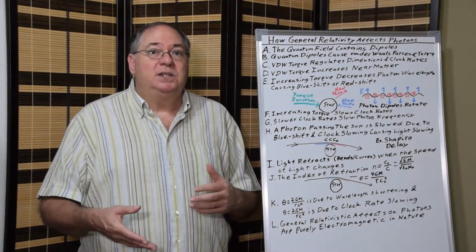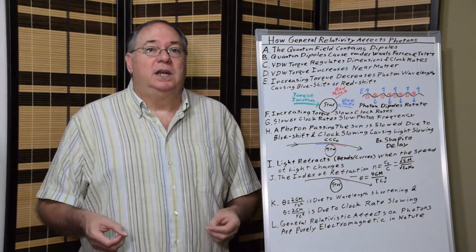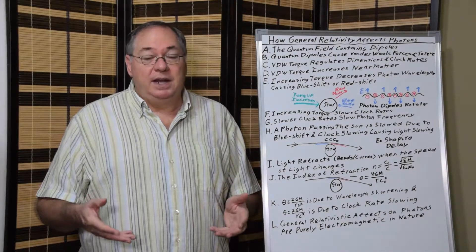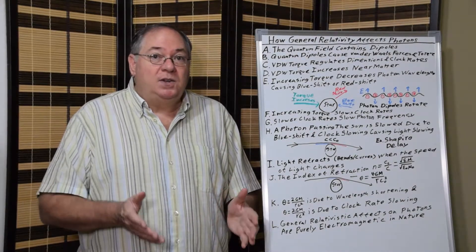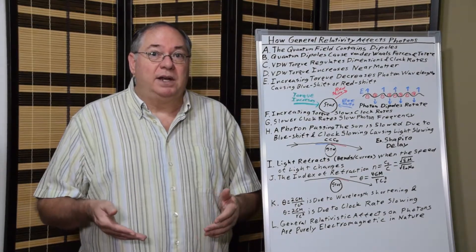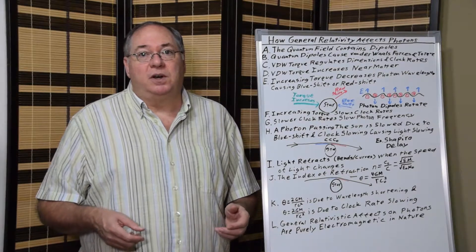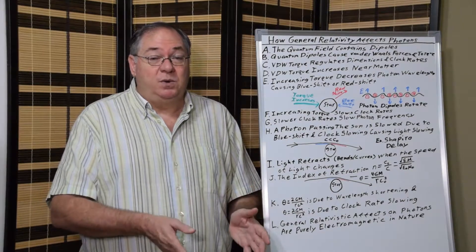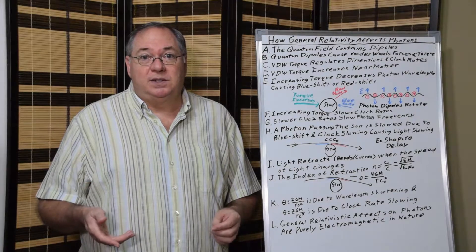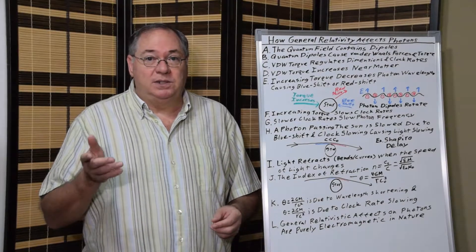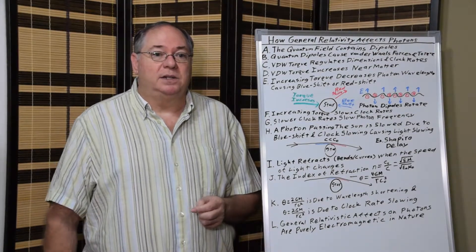This is how dimensions and clock rates emerge. Since general relativity and special relativity start with dimensions and clock rates, you have to start with the quantum field. You have to start with the van der Waals torque because that gives us wavelengths and frequencies which determine dimensions and clock rates locally.